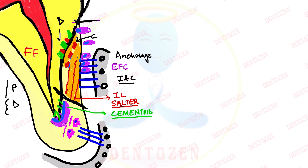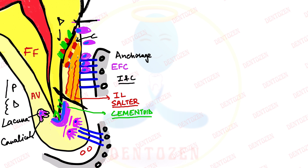Cementoid is uncalcified matrix of cementum seen in the apical region. When cementoblasts form this type of cementum rapidly, they get entrapped inside the forming matrix. The space in which the entrapped cell lives inside the cementum is called a lacuna. Since cementum is avascular (no blood supply), the cell gets nutrition from the blood vessels of the PDL. For this, the cell's processes are directed towards the PDL — another viva question. The smaller spaces in which these processes live are called canaliculi.